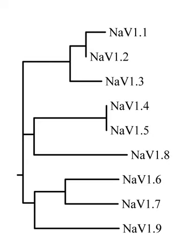Evolution: A voltage-gated sodium channel is present in choanoflagellates, thought to be the closest living unicellular relative of animals. This suggests that an ancestral form of the animal channel evolved before multicellularity. The four-domain animal voltage-gated sodium channel likely evolved from a single subunit ion channel — probably permeable for potassium ions — via a sequence of two duplication events. This model is supported by the fact that subunits I and III, and II and IV, group by similarity, suggesting that a two-channel intermediate generated from the first duplication existed long enough for divergence to occur between its two subunits.